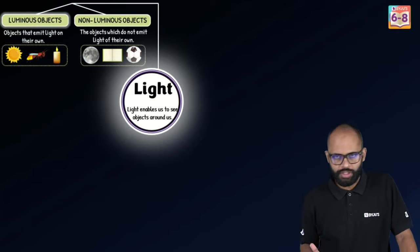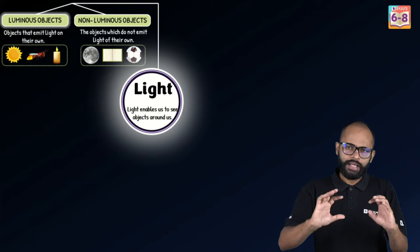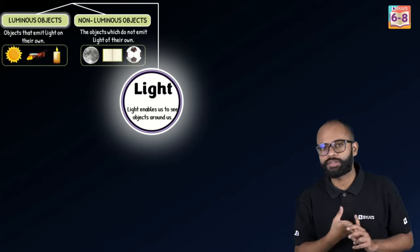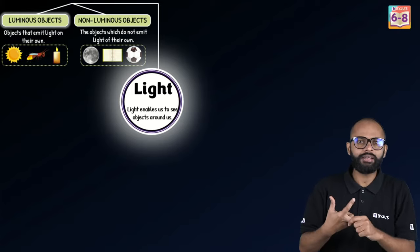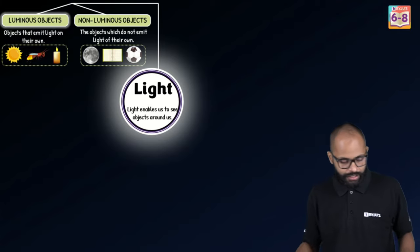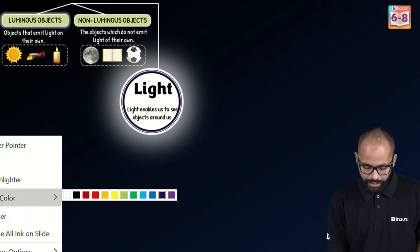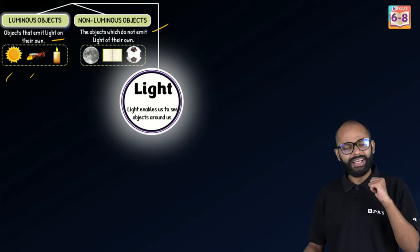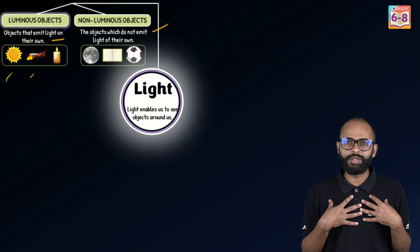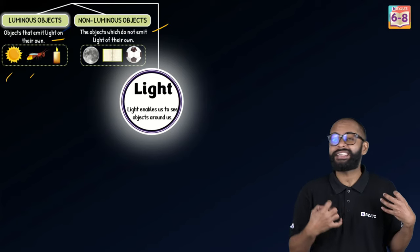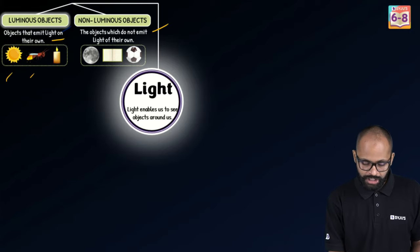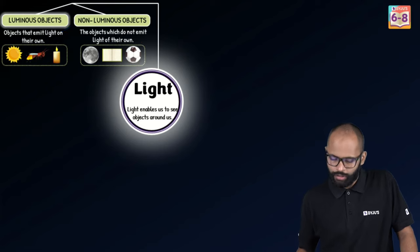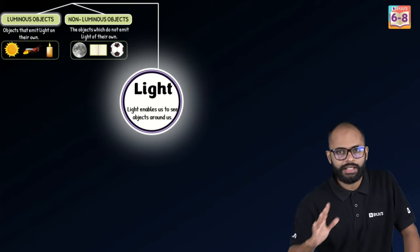There are two types of objects in your syllabus. Sun, moon, planets, stars — everything is visible to us, but there could be two reasons. Either that object emits its own light — luminous objects are objects that emit their own light, like the sun, a candle, a bulb. Non-luminous objects do not emit light of their own. I am visible to you but I am not a luminous object — I'm reflecting the light coming into the studio falling on me. Objects which do not emit light of their own are called non-luminous objects. This is the basic difference — very important for exams.